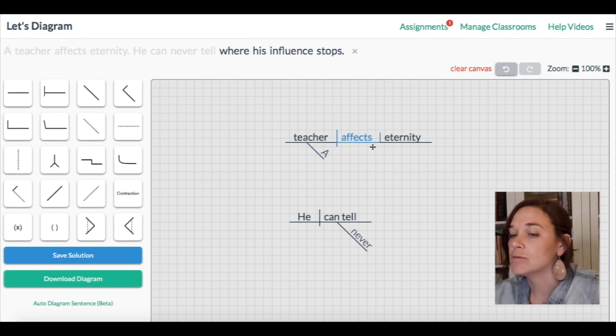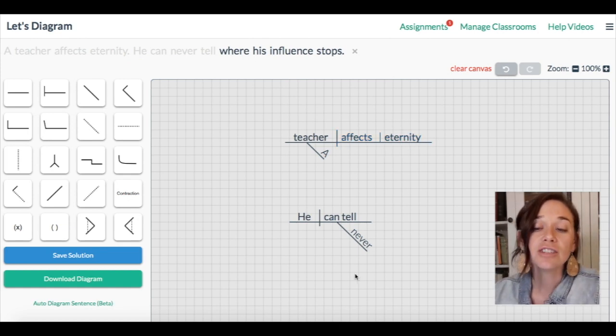Now remember back up here I said we asked that question what? We said a teacher affects what? A teacher affects eternity. This was the direct object. Let's try that down here. He can never tell what? He can never tell where his influence stops. So here in this sentence we had a single word as the direct object. Now we have all of these words as the direct object, and I will show you how we diagram that.